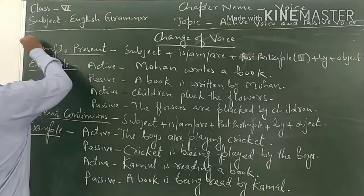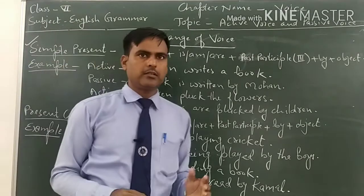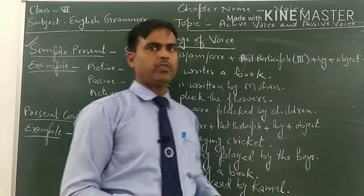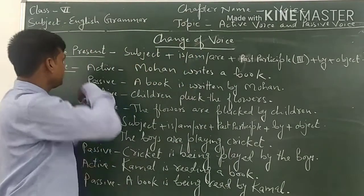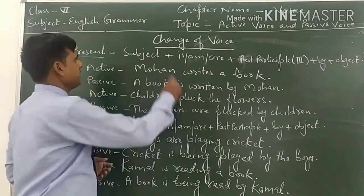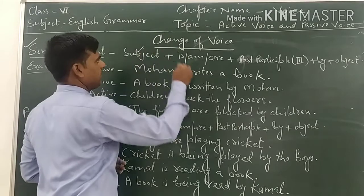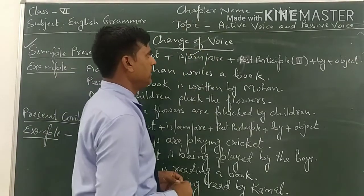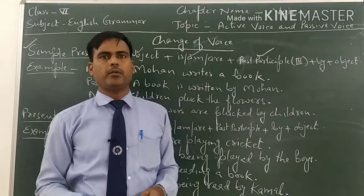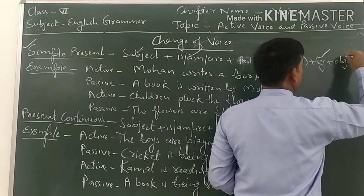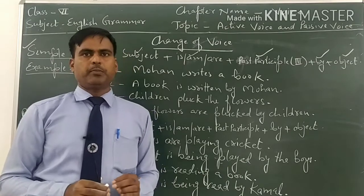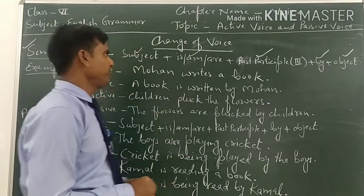Simple present tense — how can we change a sentence from active voice to passive voice? The rule is: write the subject, then is/am/are according to the subject, then the past participial or third form of the main verb, then 'by agent,' and then the object. This is the rule to change simple present tense from active voice to passive voice.